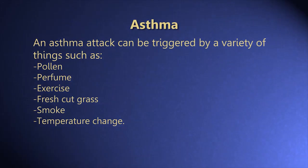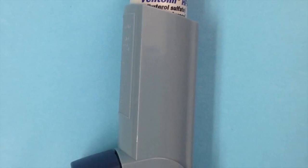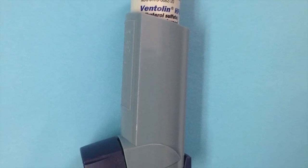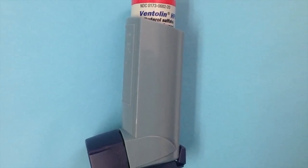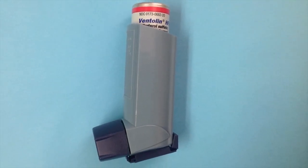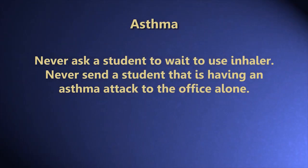An asthma attack can be triggered by a variety of things such as pollen, mold, perfume, exercise, fresh cut grass, smoke, or temperature change. Many students with asthma have an inhaler at school and a health care plan. Some students have a consent form on file from their doctor to carry their inhaler on their person, while others keep their inhaler in the school health room. Never ask a student to wait to use their inhaler and never send a student having an asthma attack to the office alone.